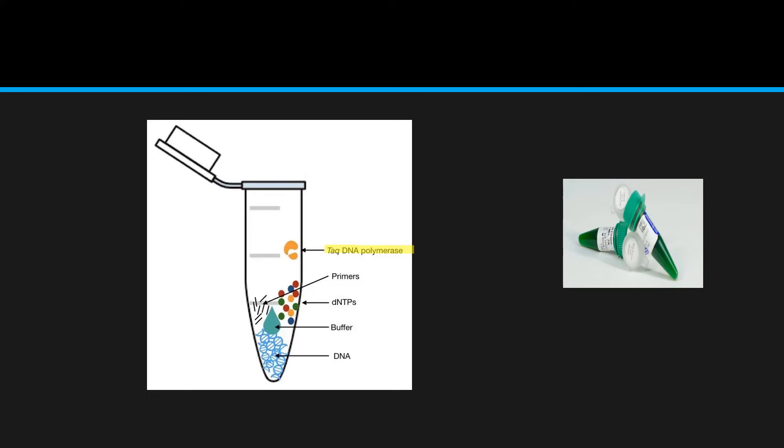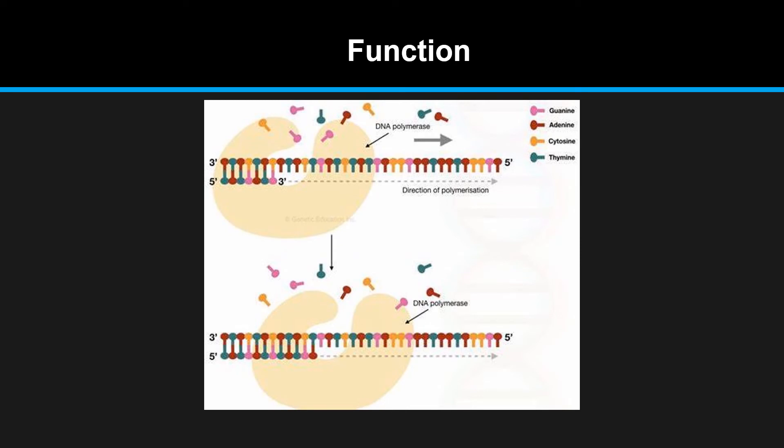The function of TAQ polymerase is equal to DNA polymerase 1 of prokaryotes. When I set up a reaction of a PCR, I want to amplify a target DNA. This is the target DNA. I add the prerequisites of a PCR reaction.